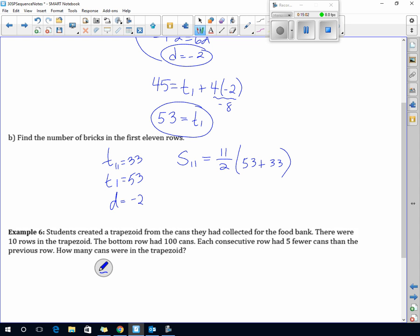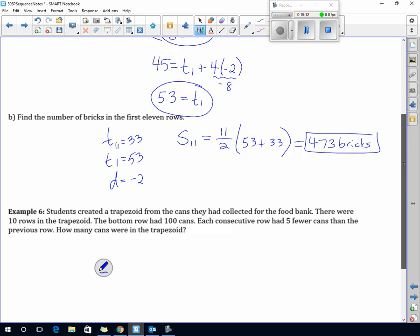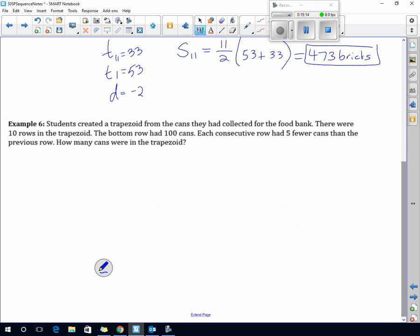Students created a trapezoid from the cans they collected from the food bank. There were 10 rows in the trapezoid. The bottom row has 100 cans, so T1 is 100. T10 is the final one. Each consecutive row has 5 fewer, so that means D equals minus 5.